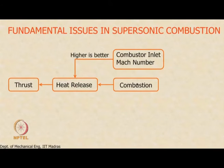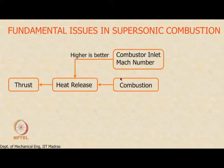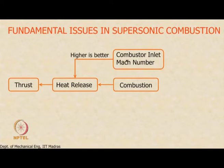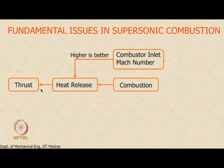So heat release is controlled by two factors: number one, combustion itself; and number two, the combustor inlet Mach number. For the supersonic combustor, since you are operating on the supersonic branch of the Rayleigh curve, the higher the combustor inlet Mach number, the more heat we can add before it will thermally choke. So higher inlet Mach number is better from a heat release perspective — these are the two limiting factors in heat release and ultimately in thrust in the supersonic combustor.